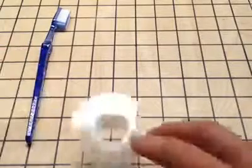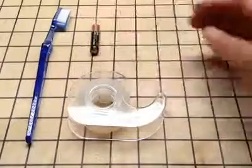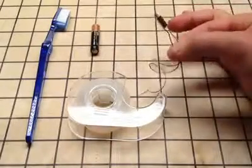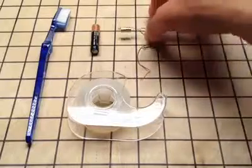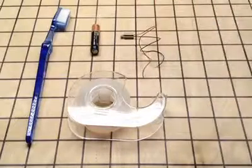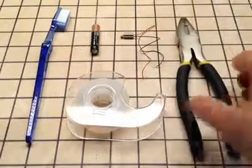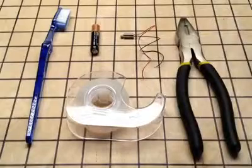BrushBot. You'll need an old toothbrush, some tape, a AAA battery, and a cell phone vibrator motor. You can find them at Radio Shack or your local electronics store, and some wire cutters or anything else you can find that'll cut the head off your toothbrush.